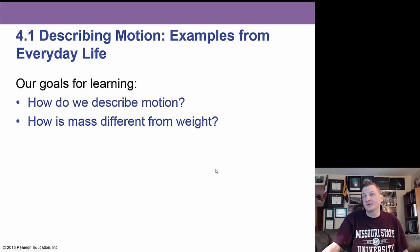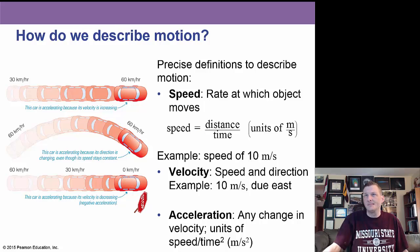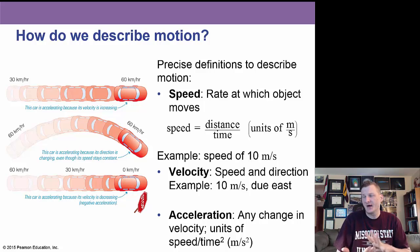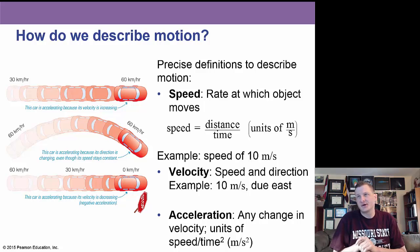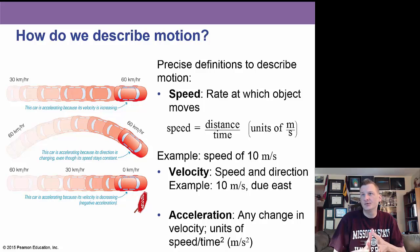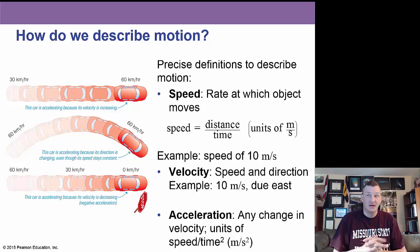Our goals for this chapter include examples from everyday life of motion: how do we describe motion, and how is mass different from weight? We have these equations — you don't need to remember them, but they're helpful to see how they work. We're going to find speed, velocity, and acceleration. Speed is the rate at which an object moves — the distance it travels divided by the time it travels. An example would be 10 meters per second.